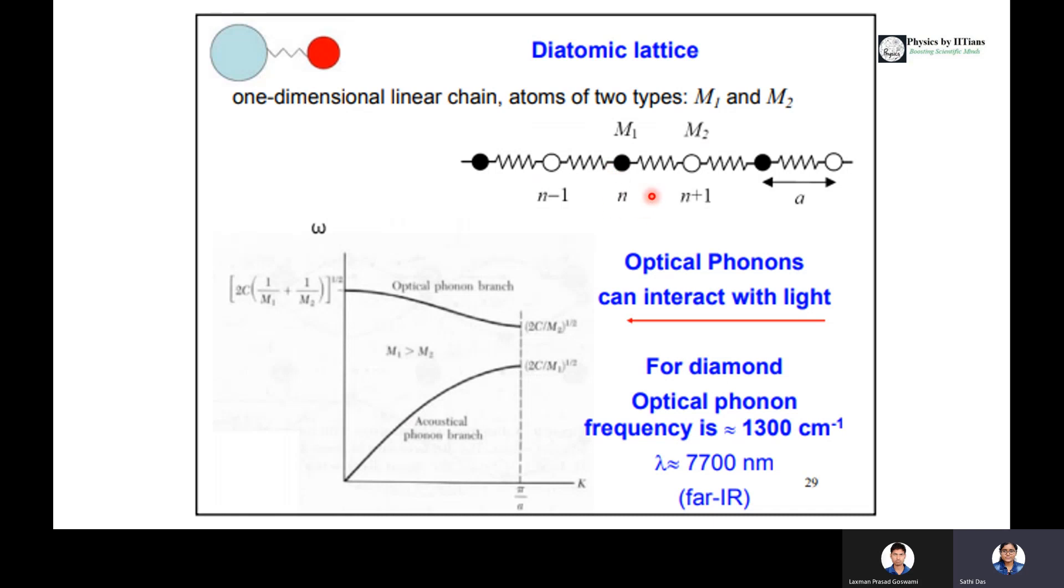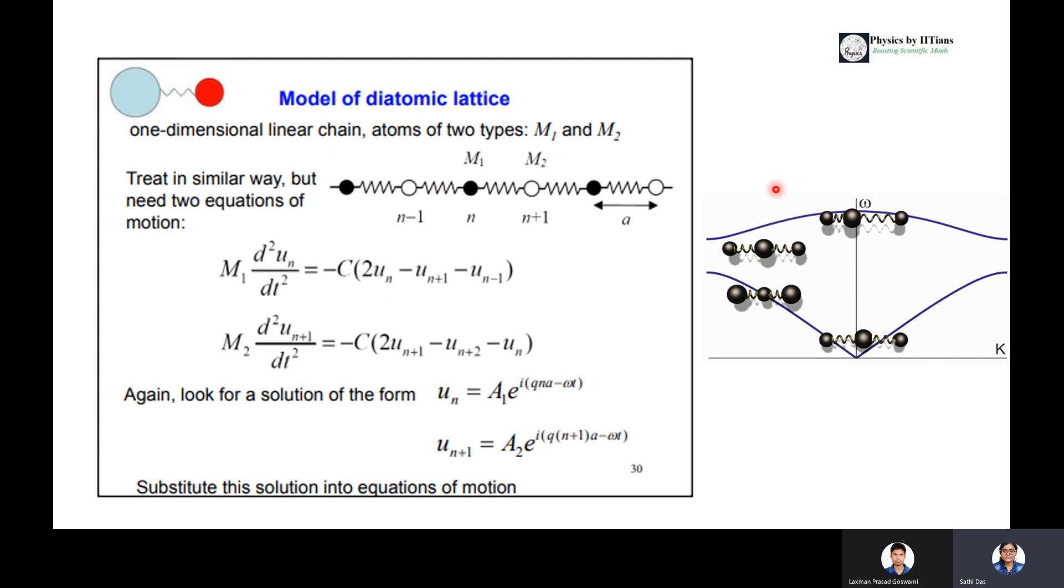Let us consider the motions of two different types of atoms. One having seated at position n, another at position n minus 1 and another at position n plus 1. The displacement amount is A. This one-dimensional linear chain of atoms of two types needs two equations of motion for their specification or dynamics, one with mass M1 and another with mass M2.